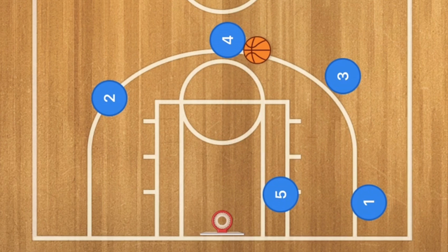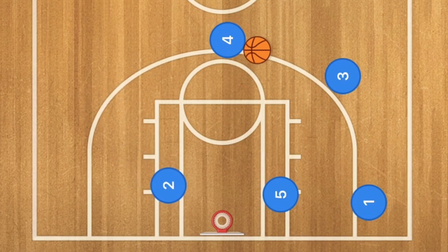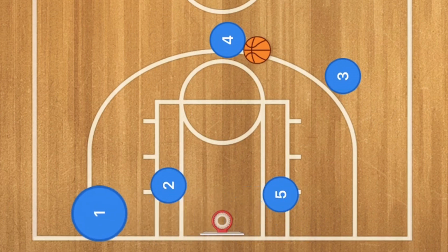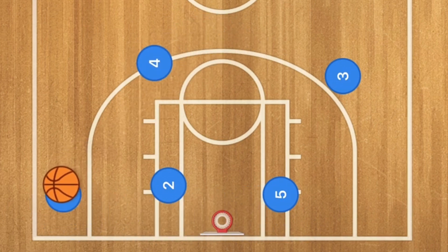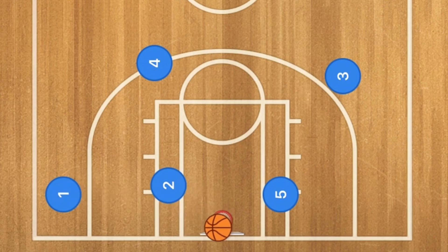Player four will come to the top of the key, where player three will pass to him. Player two is going to go into the low post. Player one is going to use five and two as a screen, player four is going to dribble off to this side, and four is going to pass to player one for the three-point shot. This one works best against man-to-man defense.